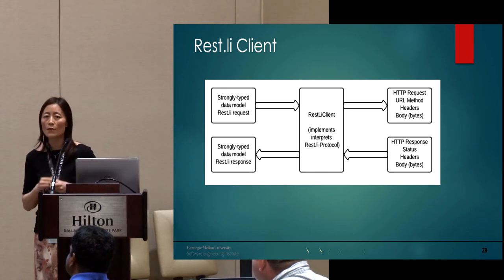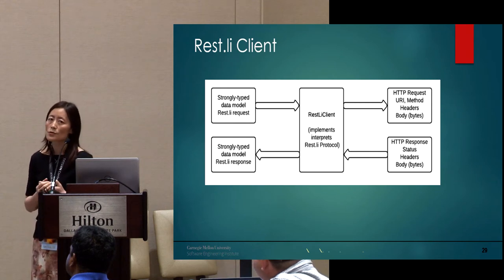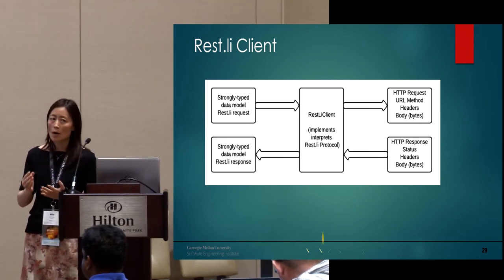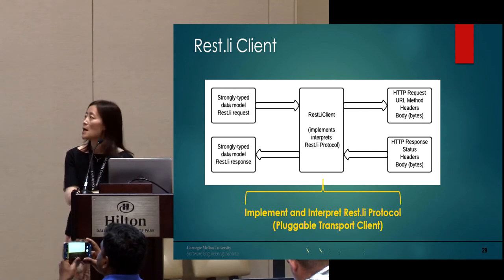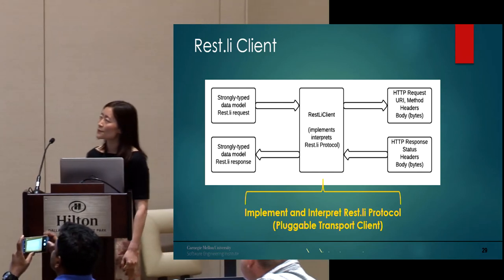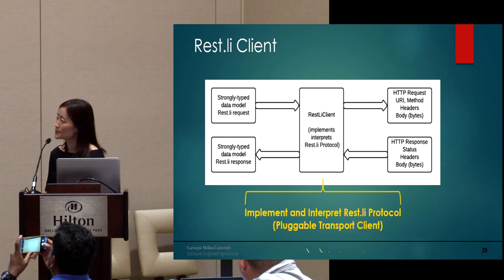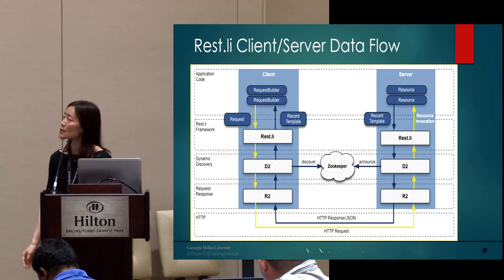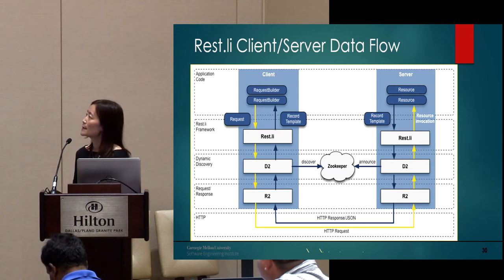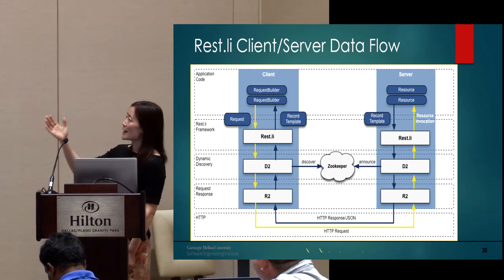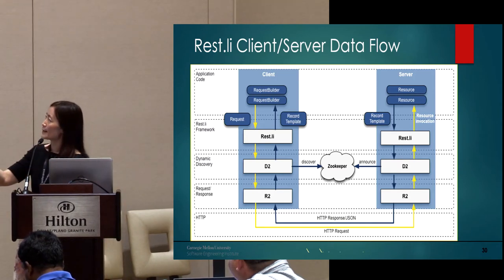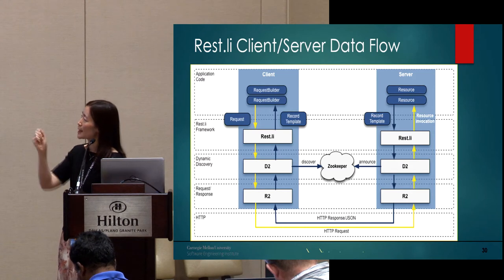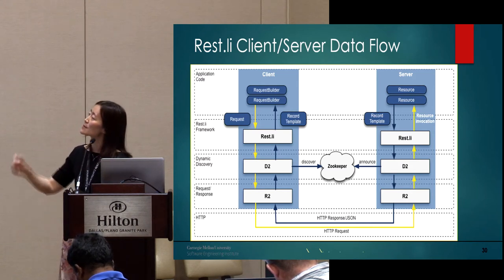Rest.li defines its own over-the-wire protocol, but hides it through the Rest.li client framework. The core of the Rest.li client framework is the Rest.li client interface with its pluggable transport client. The Rest.li client interface implements and interprets the Rest.li protocol, then delegates to the pluggable transport client to send HTTP requests to the server and receive HTTP responses. A high-level diagram shows the interaction and data flow between a Rest.li client and server through the three-layer stack.